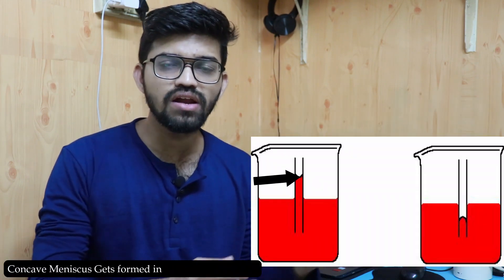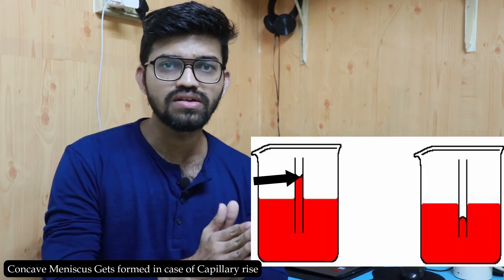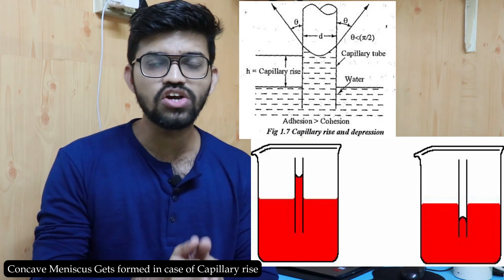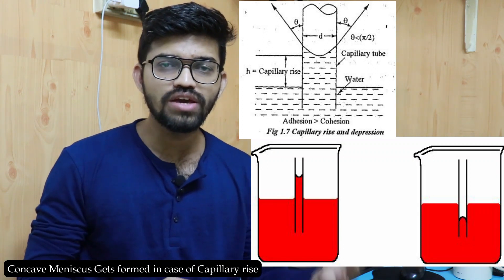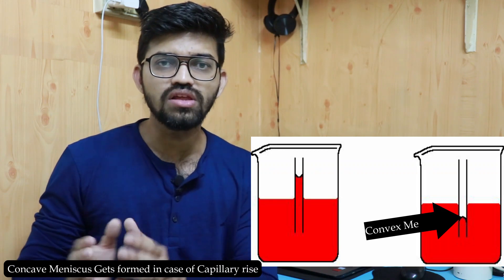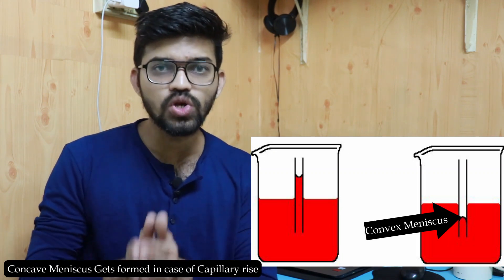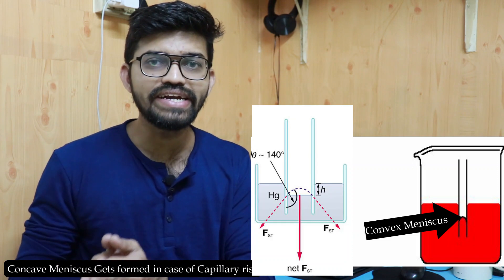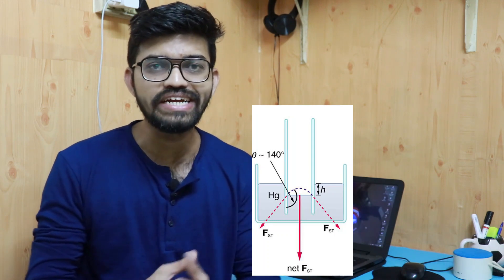In the case of capillary rise, a concave meniscus forms at the top of the water level inside the tube. The contact angle theta is less than 90 degrees. In the case of capillary fall, a convex meniscus forms at the mercury level inside the tube, and the contact angle theta is more than 90 degrees, as you can see in these images.